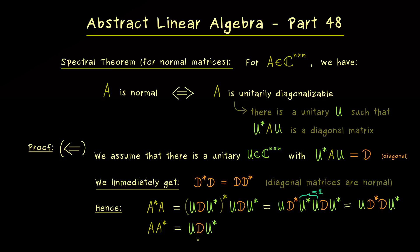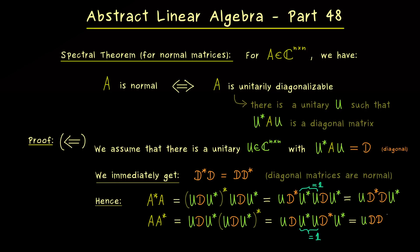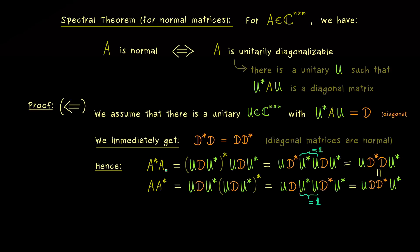Similarly, for the other order, A A* gives us U D D* U*. Since we know D* D = D D* (diagonal matrices commute), we conclude A* A = A A*, so A is a normal matrix. This closes the equality and the first implication of the equivalence is shown.